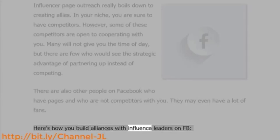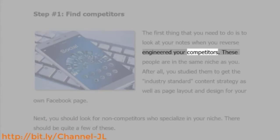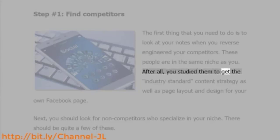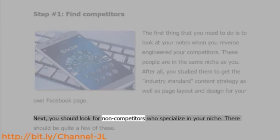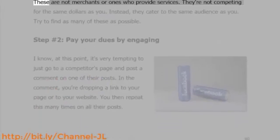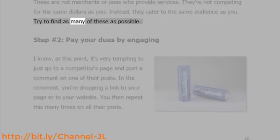Here's how you build alliances with influence leaders on Facebook. Step number one: find competitors. The first thing you need to do is look at your notes from when you reverse-engineered your competitors. These people are in the same niche as you — you studied them to get the industry-standard content strategy as well as page layout and design for your own Facebook page. Next, look for non-competitors who specialize in your niche. These are not merchants or ones who provide services; they're not competing for the same dollars as you. Instead, they cater to the same audience. Try to find as many of these as possible.